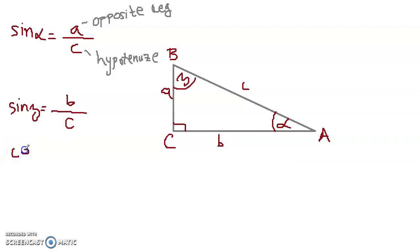Cosine of angle alpha is adjacent leg. So adjacent leg would be B, hypotenuse C. I will write that as well. So adjacent over hypotenuse.